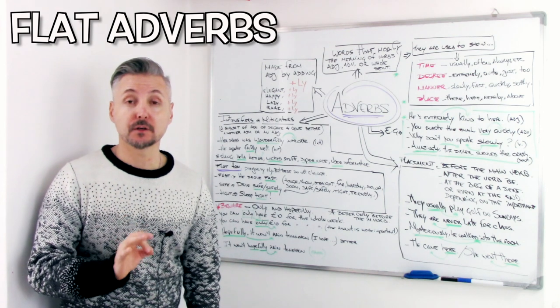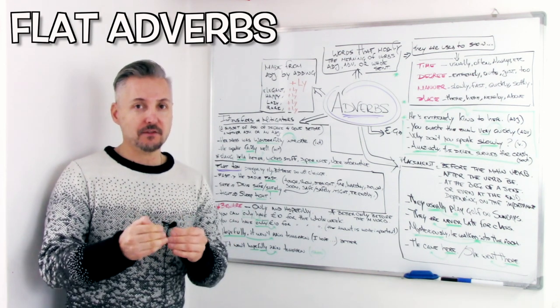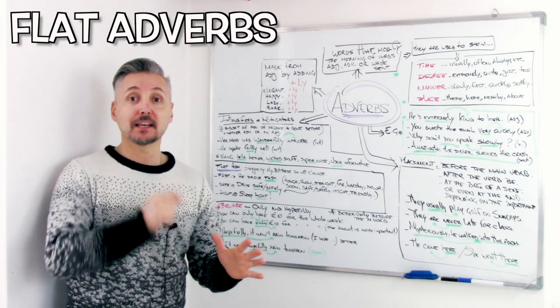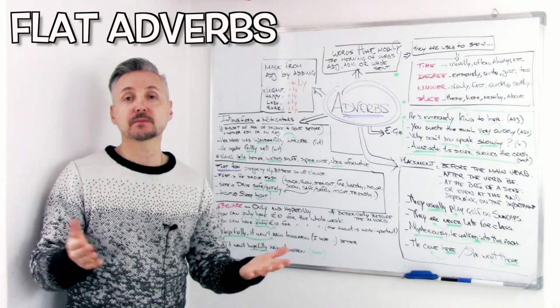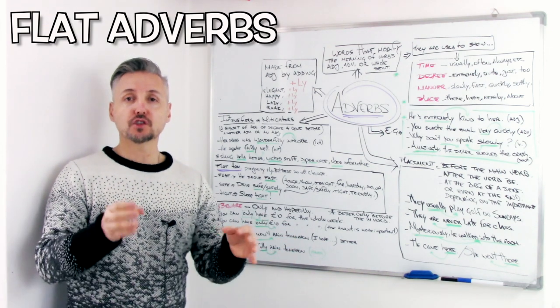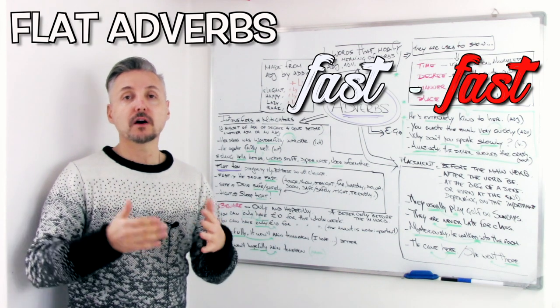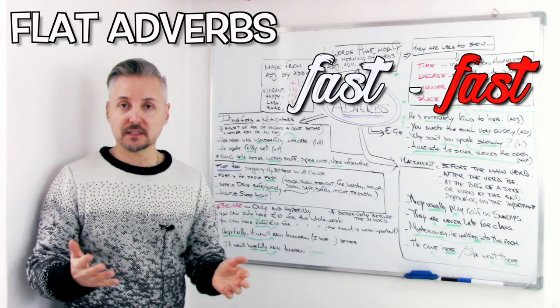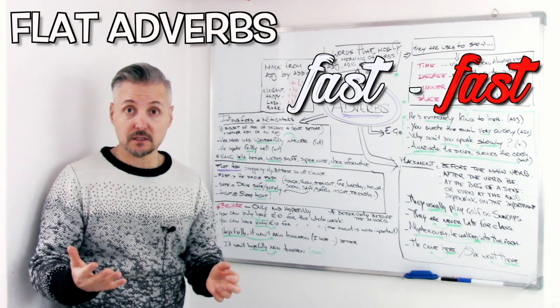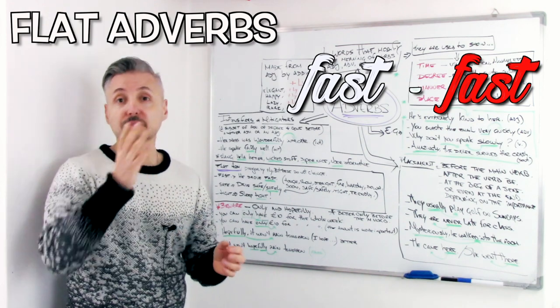Now, let's talk about flat adverbs. What are they? Well, I told you that an adverb is made by adding -ly to an adjective. Flat adverbs do not change. For example, fast. He drove fast. He drove fast. We cannot say he drove fastly. He drove fast. The adverb of the adjective fast is fast.